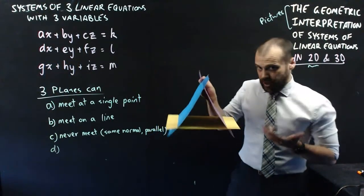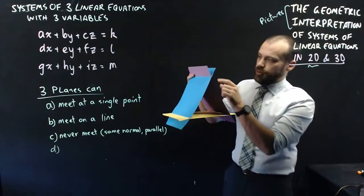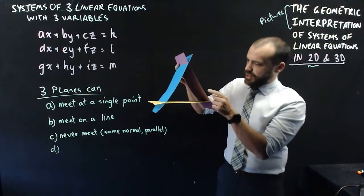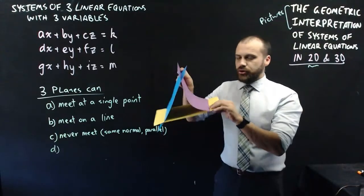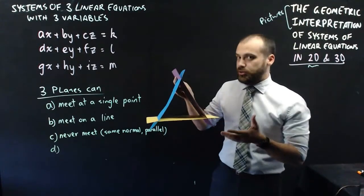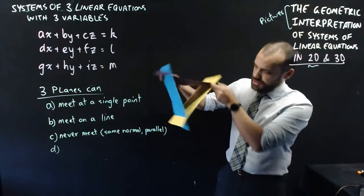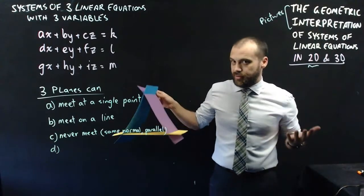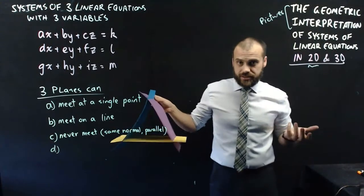We can end up in a sort of rock-paper-scissors situation where blue and purple meet, yellow and blue meet, yellow and purple meet, but they have no common point of intersection, no common line of intersection. So this is another interesting way that three planes can not meet in this instance.